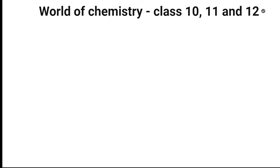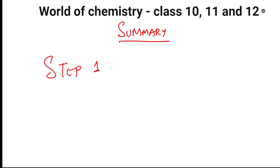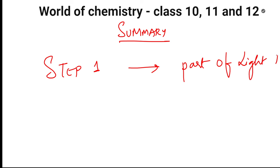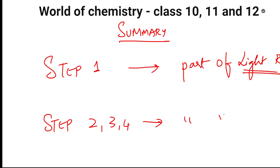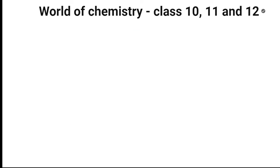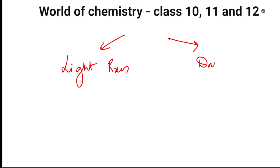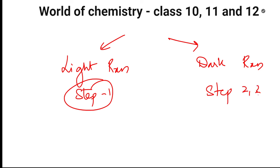Let us do one summary of photosynthesis. Step number 1 is part of the light reaction which happens in photosynthesis. The light reaction is: step 1 — activation of chlorophyll. Then steps 2, 3, and 4 are part of dark reactions. In the dark reactions: step 2 is reduction of carbon dioxide, step 3 is formation of starch, step 4 is conversion of glucose into starch. In the exam, they may ask you: what are the light reaction steps and what are the dark reaction steps? Light reaction steps: step 1 only. Dark reaction steps: steps 2, 3, and 4.